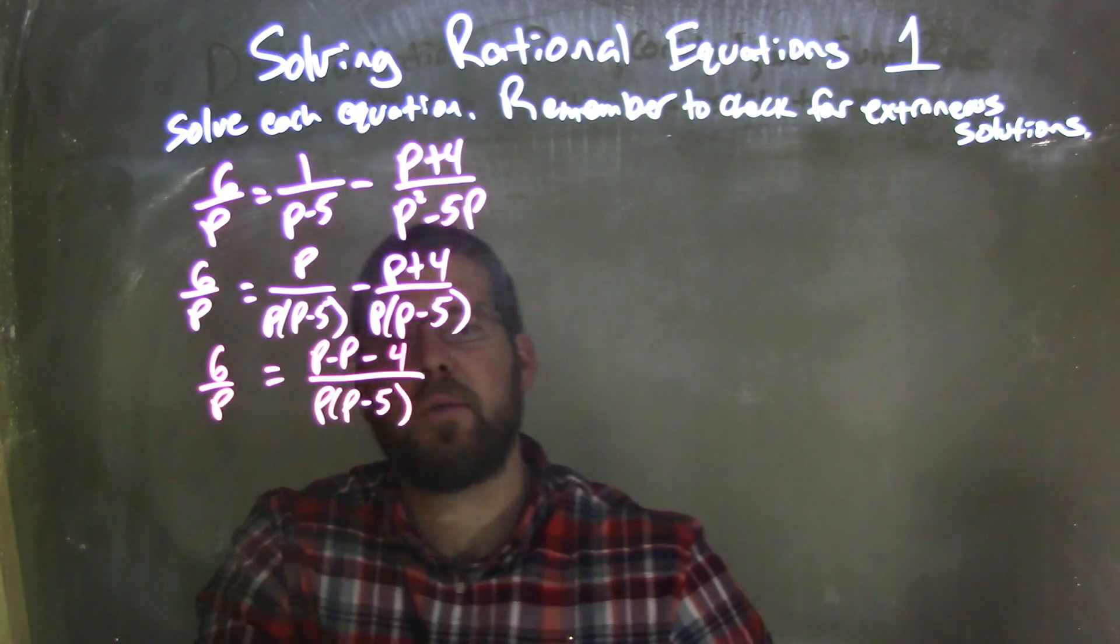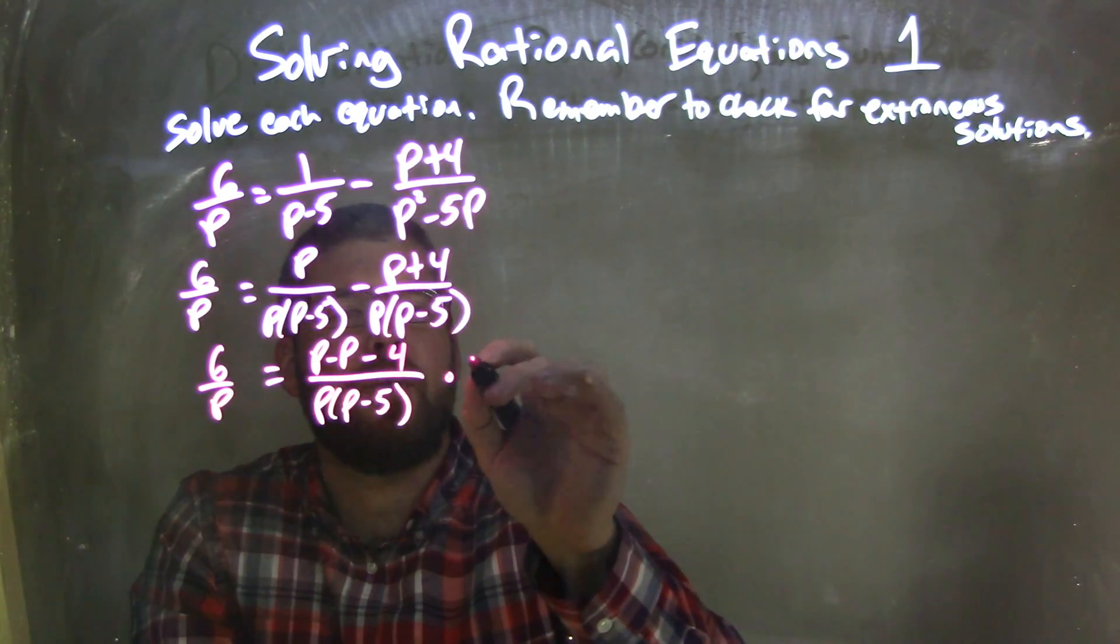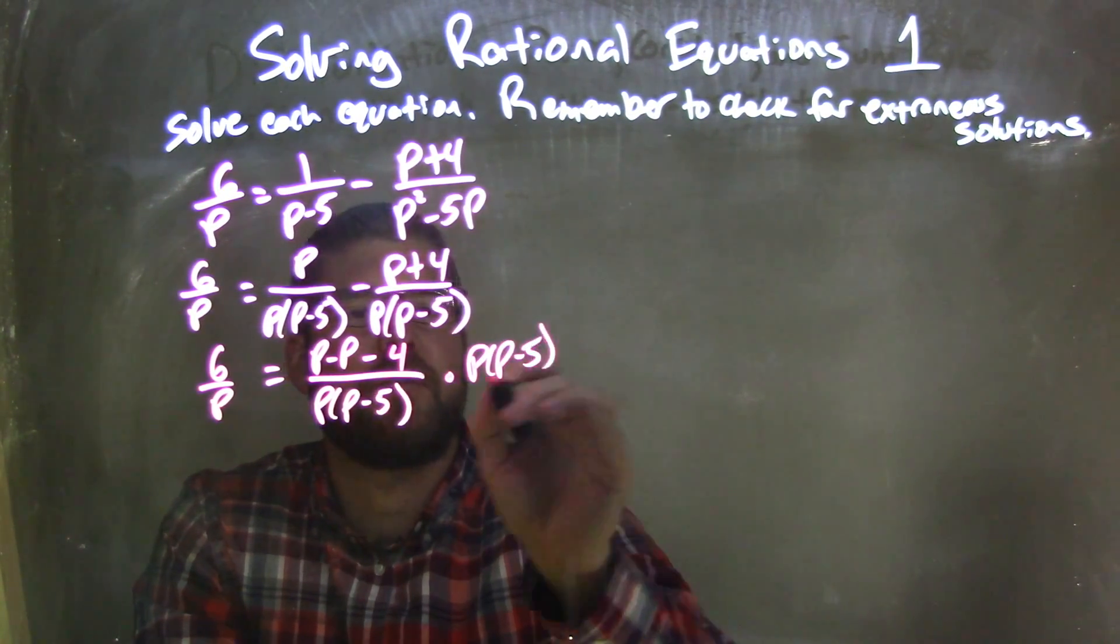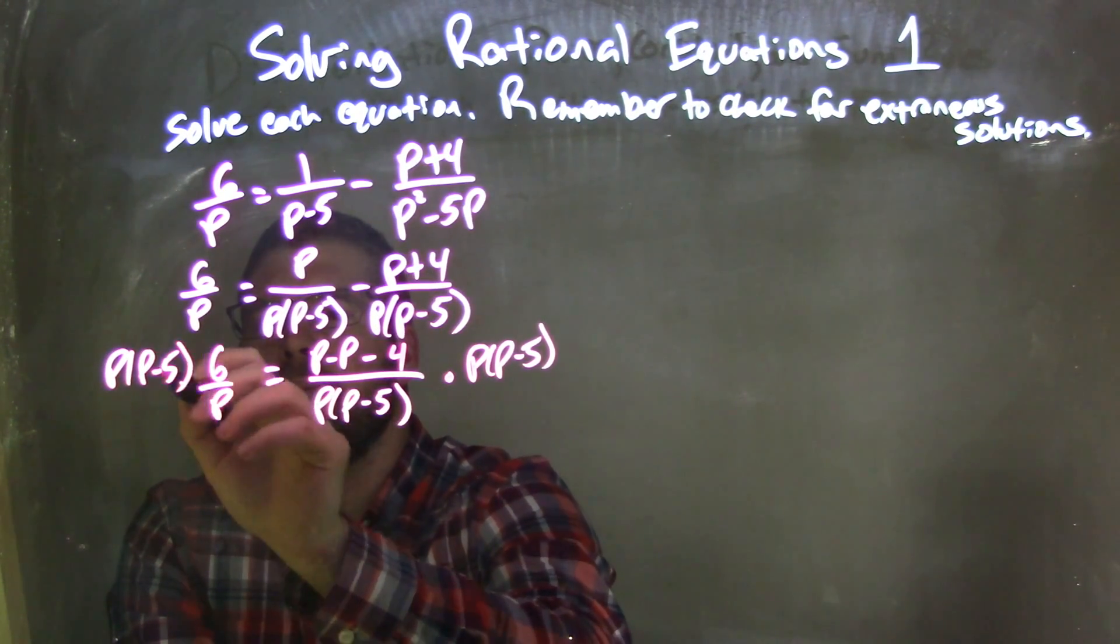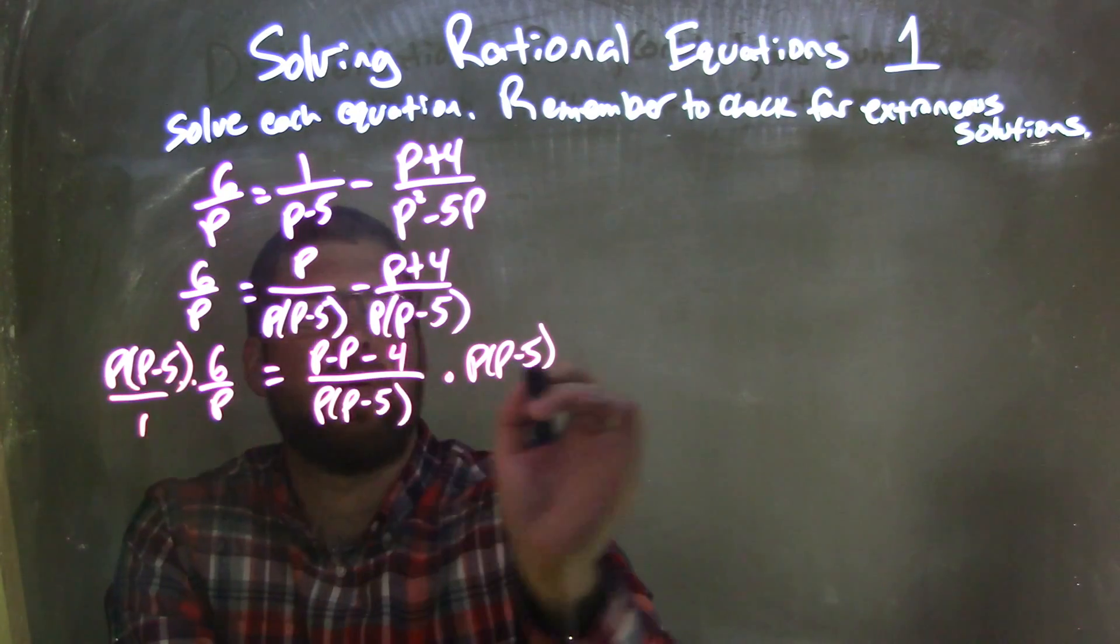And the right hand underneath, we have p times p minus 5, which I'm now going to multiply to both sides, p times p minus 5, times p times p minus 5, multiply that to both sides, let's do it over 1, why not?